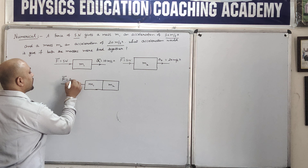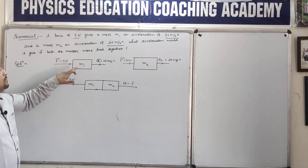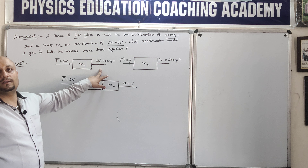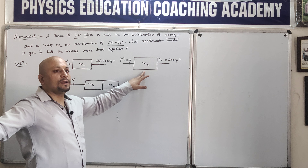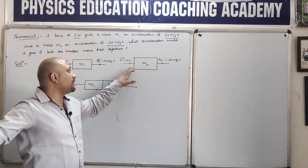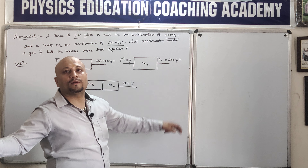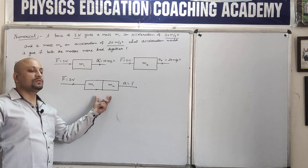This is the first body with mass M1. The force applied is 5 Newton, so the acceleration will be 10 meters per second square. This is the second body with mass M2, and the force applied is also 5 Newton. Now, if we combine masses M1 and M2, tie them together, and apply the same 5 Newton force, then tell me how much acceleration will be produced.